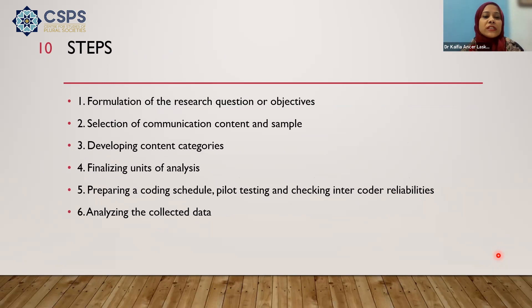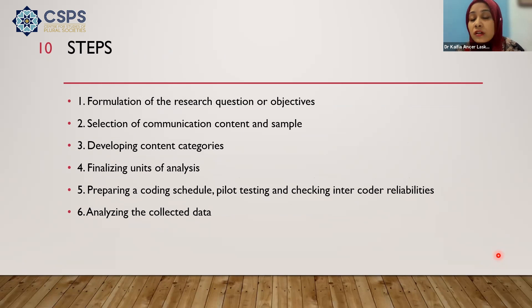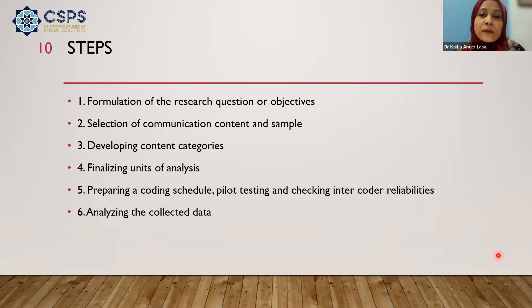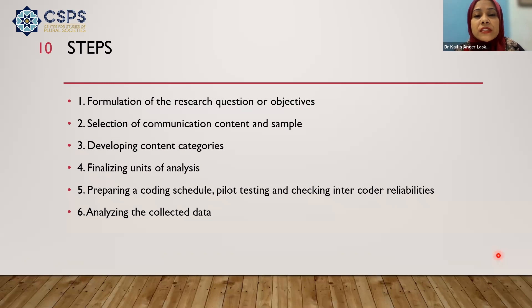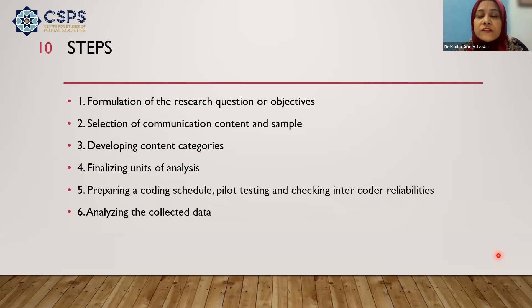How do we proceed with the research? First, we formulate certain research questions that will guide our selection of communication content. Then we select the sample, following certain procedures of sampling techniques — either probability sampling technique or non-probability sampling technique. Even if we are doing a non-probability sampling technique like convenience sampling or purposive sampling, we should justify it.